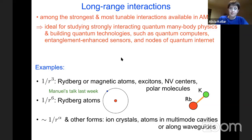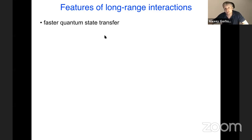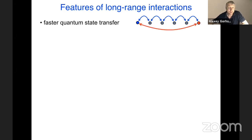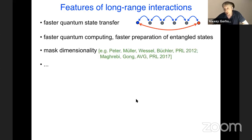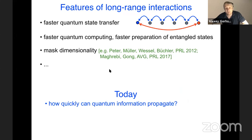These interactions are among the strongest and most tunable available in AMO, making them ideal for studying strongly interacting quantum many-body physics and building quantum technologies such as quantum computers, entanglement-enhanced sensors, and nodes of the quantum internet. Long-range interactions have interesting features — for example, you can send an unknown quantum state faster across a chain, and with direct strong long-range interactions between qubits you can transmit quantum information faster. You can also do faster quantum computing, faster preparation of entangled states, and long-range interactions can mask the dimensionality of your system.